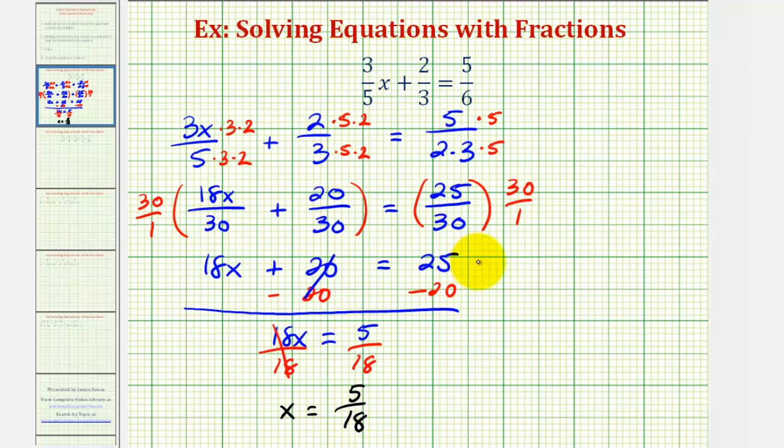Let's go ahead and check our solution. Going back to the original equation, we would have 3 fifths times x, or 3 fifths times 5 over 18, plus 2 thirds equals 5 sixths. Looking at this first product, notice how we have 5 over 5, that simplifies to 1. 3 and 18 share a common factor of 3. So our first product here is 1 sixth plus 2 thirds.